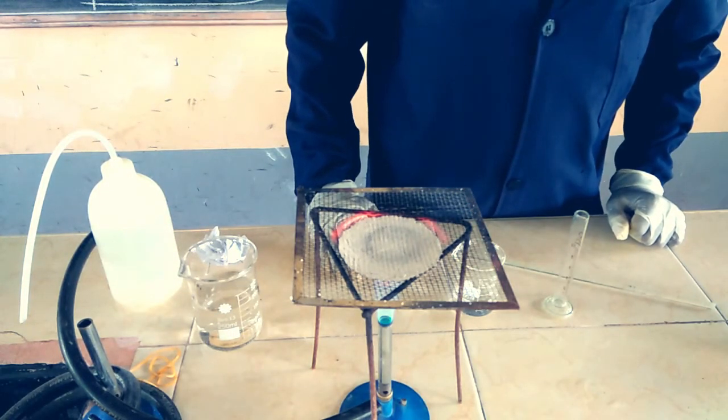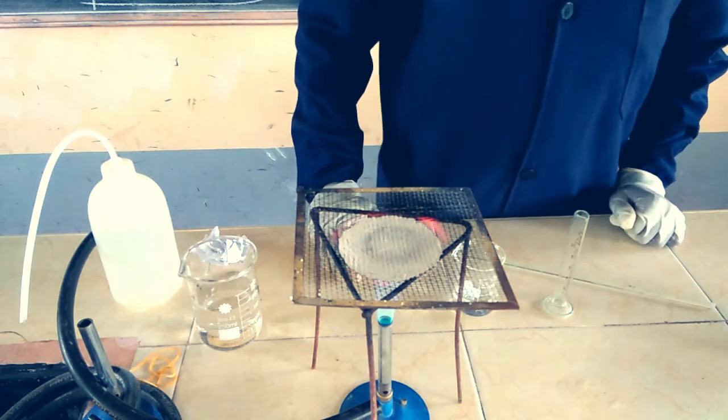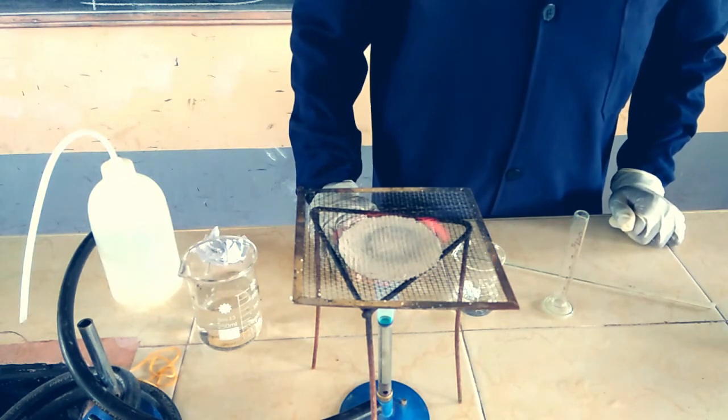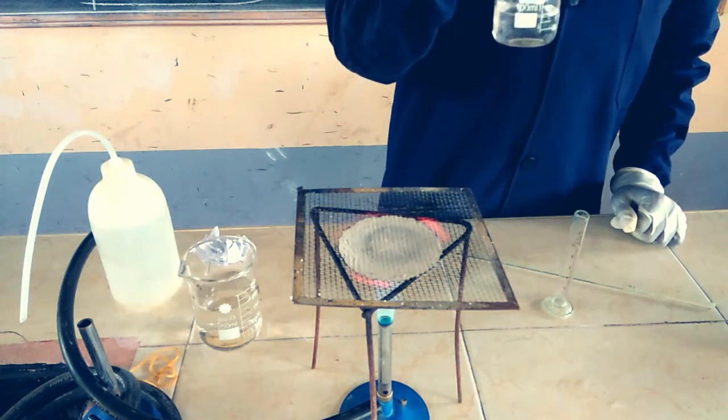I'd like today to look at how you can separate a soluble solid from a liquid. Today I have a mixture of sodium chloride and water. Sodium chloride is soluble in water, and we want to see how we can get back our sodium chloride from the water.